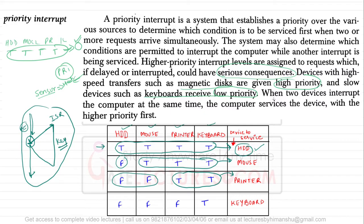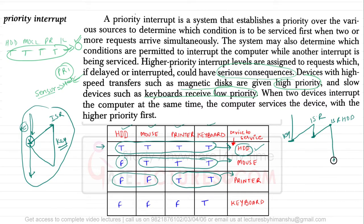If we are executing a program and a keyboard interrupt occurs, we go to the keyboard's ISR. But while servicing the keyboard interrupt, if a hard disk interrupt arrives, we stop the keyboard ISR and jump to the hard disk ISR first. After completing the hard disk ISR, we return to finish the keyboard ISR, and once that completes, we return to the original program and continue execution.